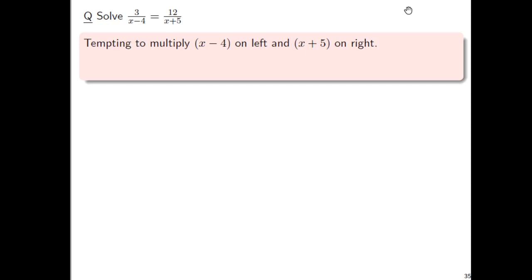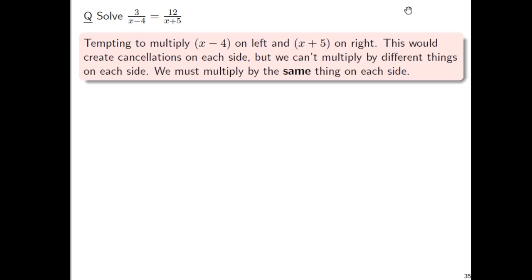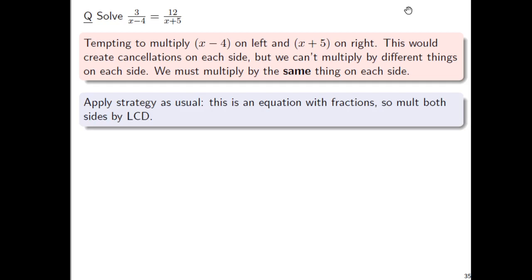It is really tempting to multiply by x minus 4 on the left and x plus 5 on the right. That would get rid of all the fractions, right? It would get rid of denominators, but you can't multiply by x minus 4 on one side and a different thing, x plus 5 on the other side. You have to multiply by the same thing on both sides.